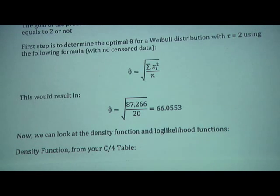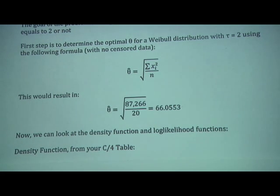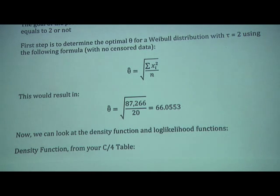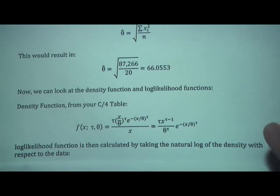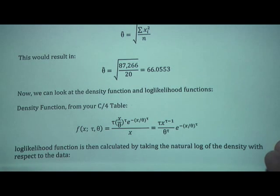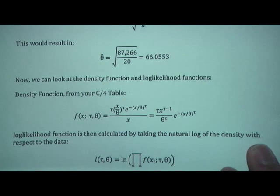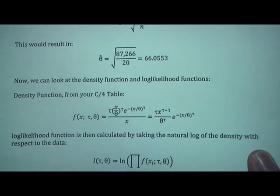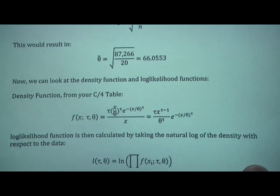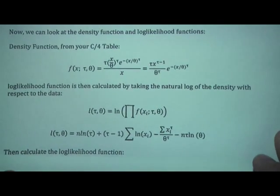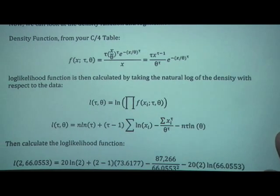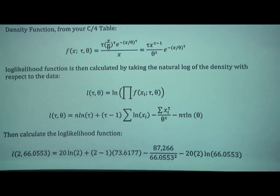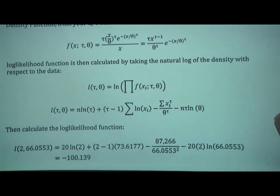Next, we look for the density function and the likelihood functions. From your C4 tables, you get the Weibull distribution density, which can be simplified. You then solve the likelihood function with respect to the data — essentially multiplying all density functions for the data points together — and take the natural log of that to get the log-likelihood formula. Calculating the log-likelihood using tau equals 2 and theta equals 66.0553 gives negative 100.139.